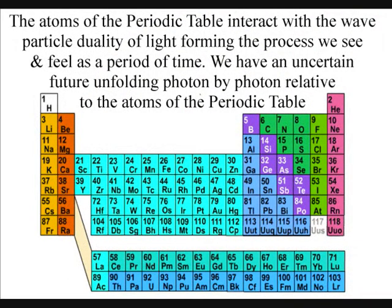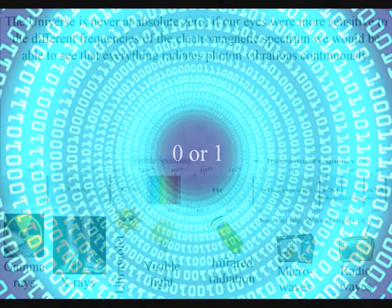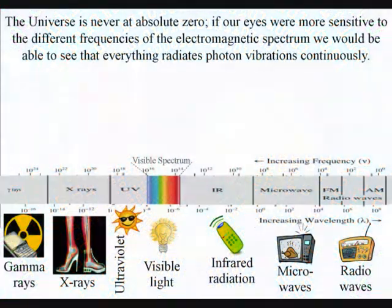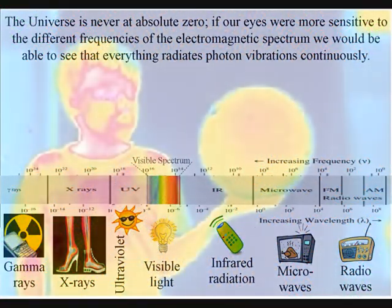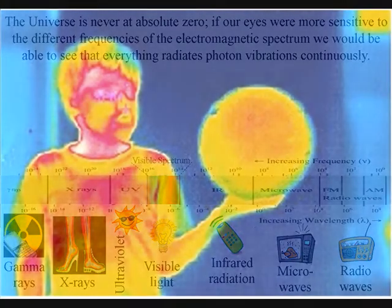Therefore, because we are made of atoms, we can choose if light is a wave or a particle, just like the zeros and ones of a computer. Wave particle duality of light gives us free will to create our own future.